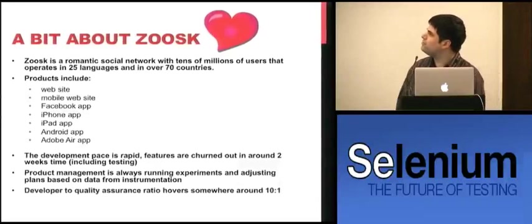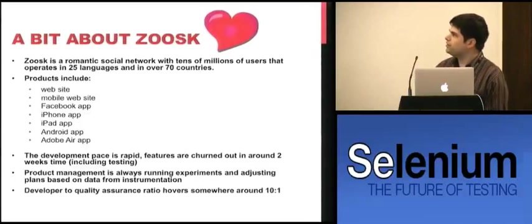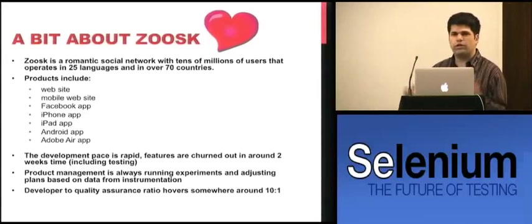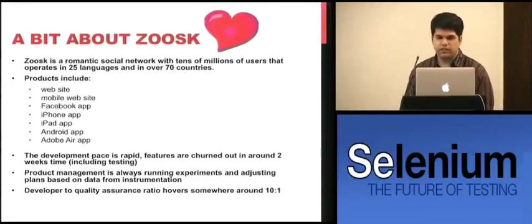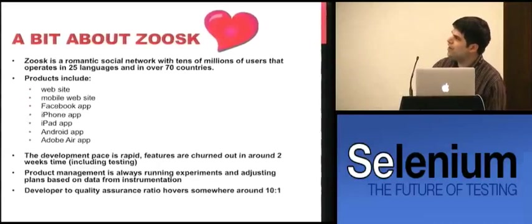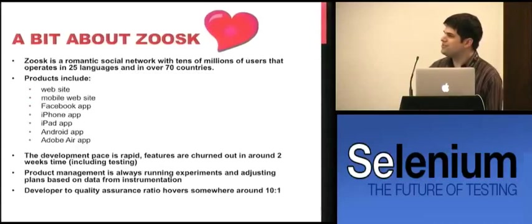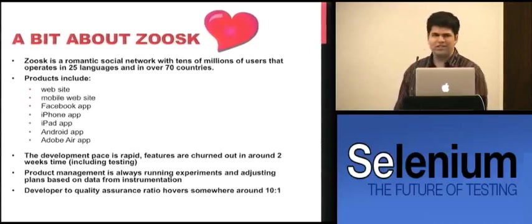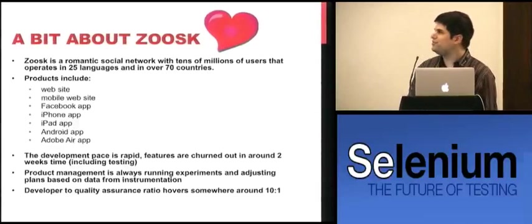A bit about Zoosk: we're a romantic social network with tens of millions of users, operating in 25 languages, 70 countries, with many products — a website, mobile website, Facebook app, iPhone app, iPad app, Android app, and an Adobe Air app. The development pace is rapid — features are turned out in about two weeks including the test period. Automation is a big part of maintaining this breakneck pace, and our QA ratio hovers around 10 to 1.